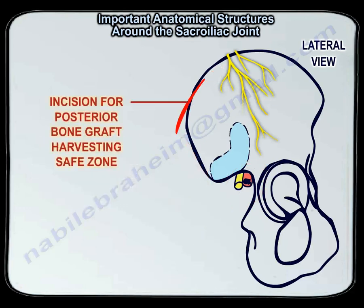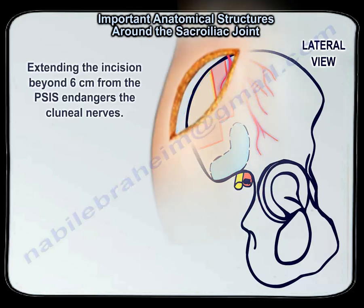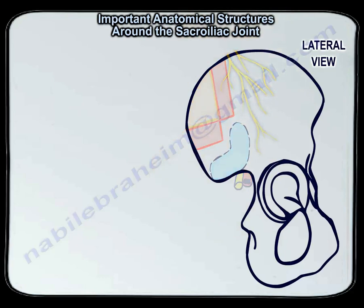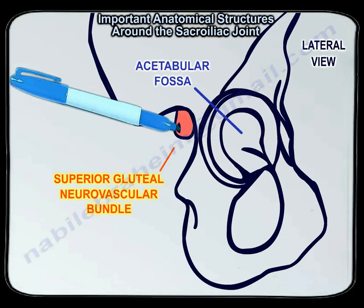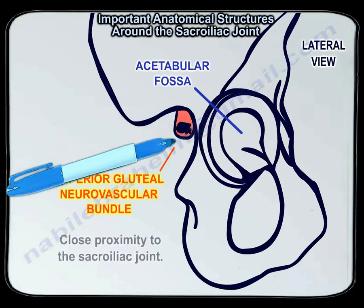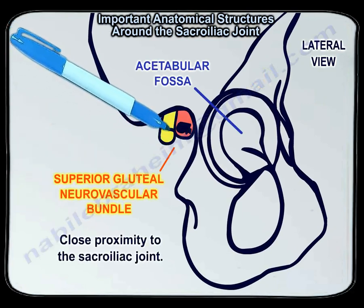This is an incision for posterior bone graft harvesting. Extending the incision beyond six centimeters from the PSIS endangers the colonial nerves. Here at the greater static notch you can see the superior gluteal neurovascular bundle with its close proximity to the sacroiliac joint.